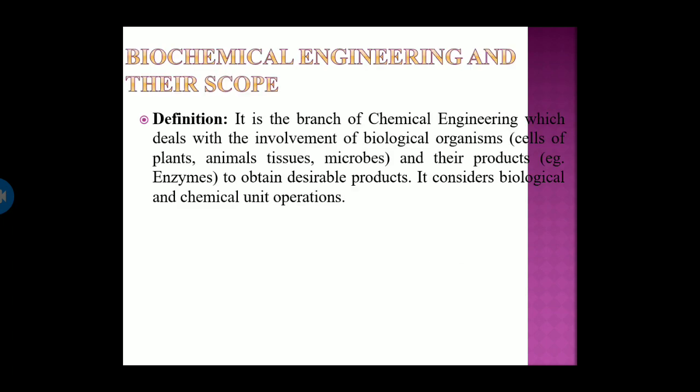First of all, let us see the definition of biochemical engineering. It is the branch of chemical engineering which deals with the involvement of biological organisms, cells of plants, animal tissues, microbes, and their products. To obtain a desirable product, it considers biological and chemical unit operations.